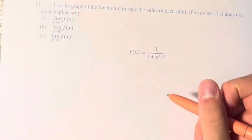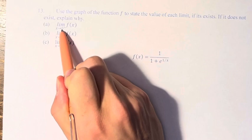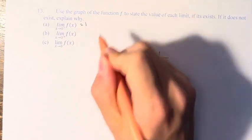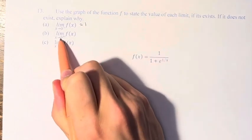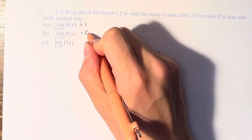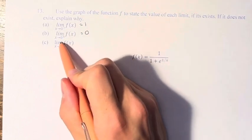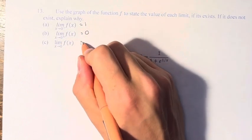So in summary, the limit as x approaches 0 from the left is equal to 1, the limit as x approaches 0 from the right is equal to 0, and the limit as x approaches 0 does not exist.